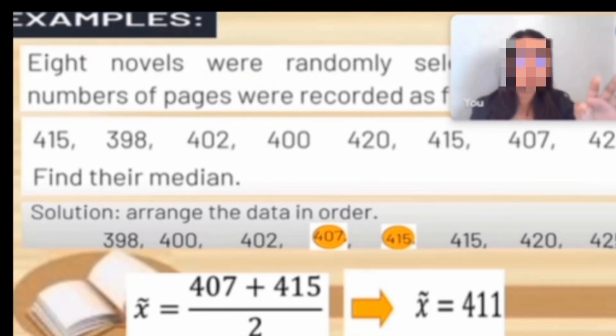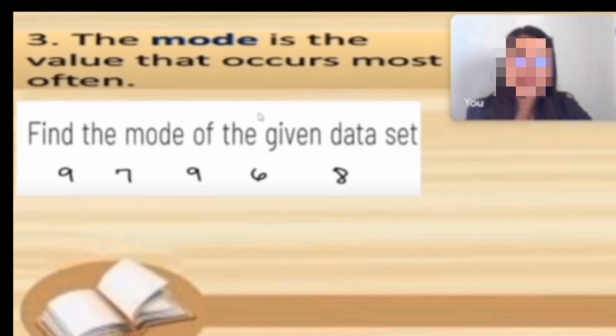Who can define mode in your own words? Numbers that occur frequently. Very good, Carmen. Mode is the value that occurs most often or frequently.